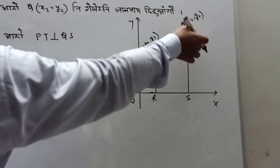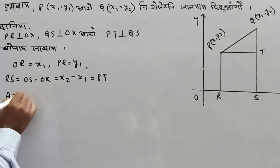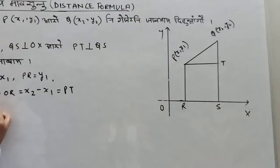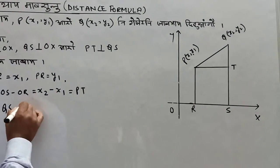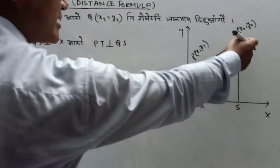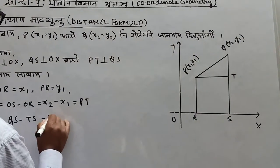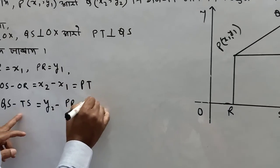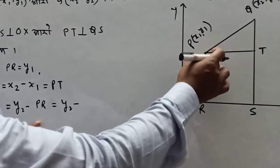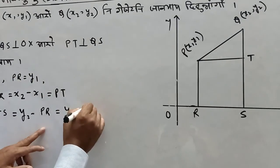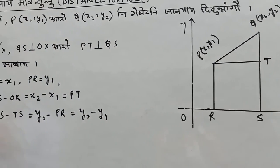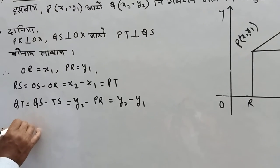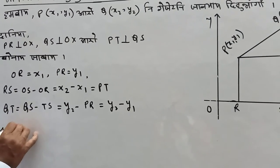What is QT? QT equals QS minus TS. QS is equal to y2, and TS is equal to PR. So QT equals y2 minus PR, which is y1. Therefore, you can write PT and QT. PT equals x2 minus x1, and QT equals y2 minus y1.